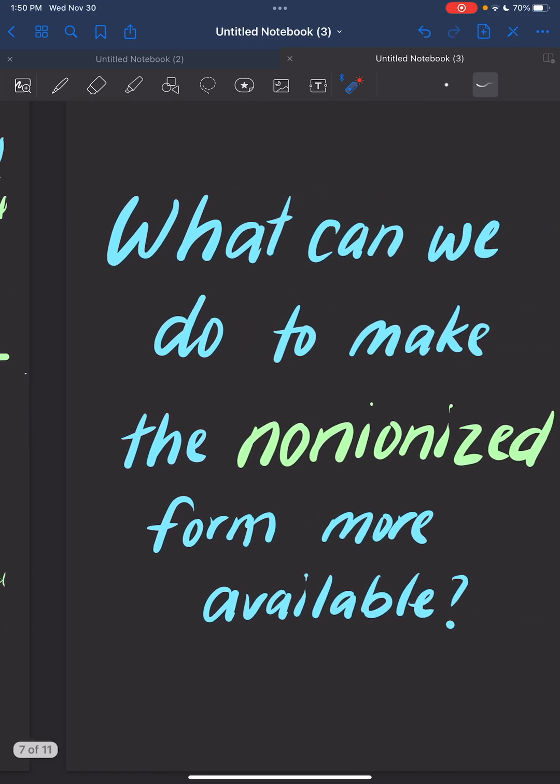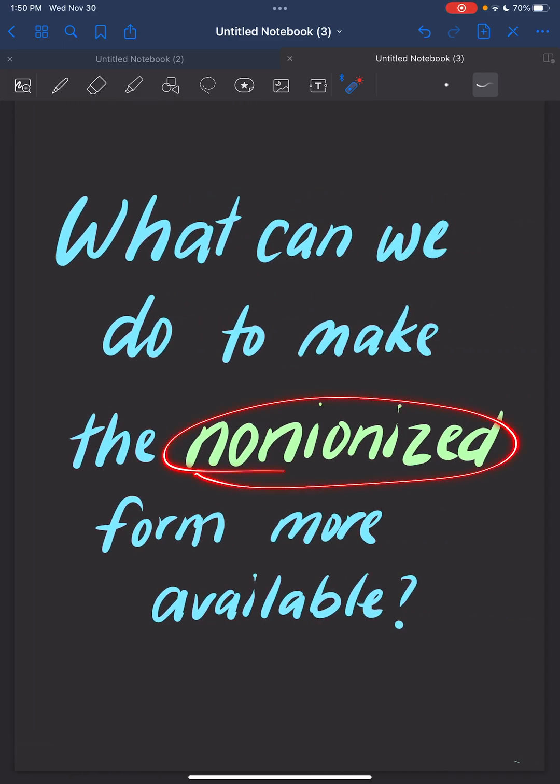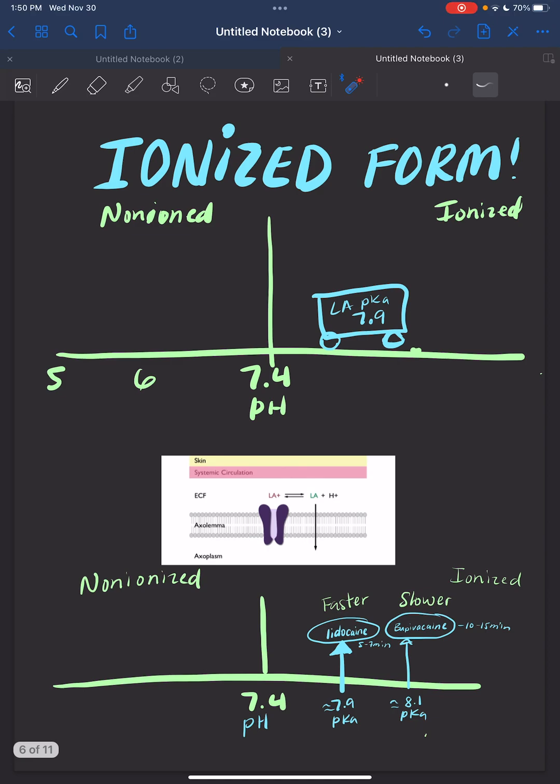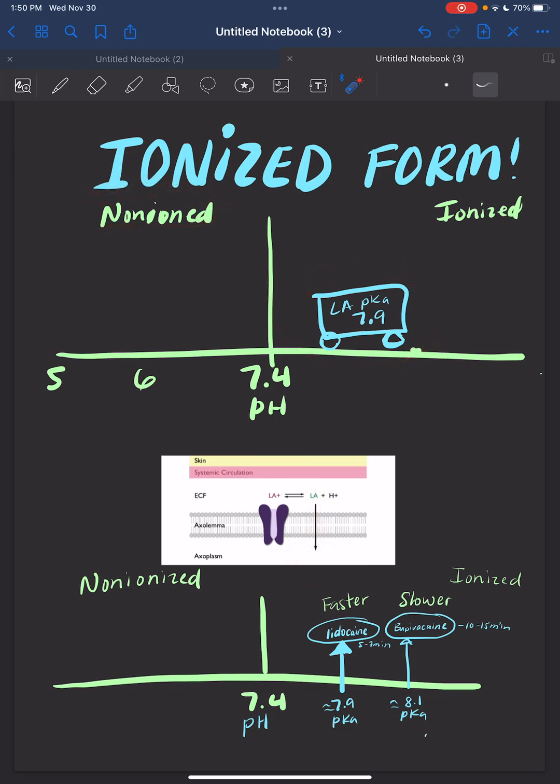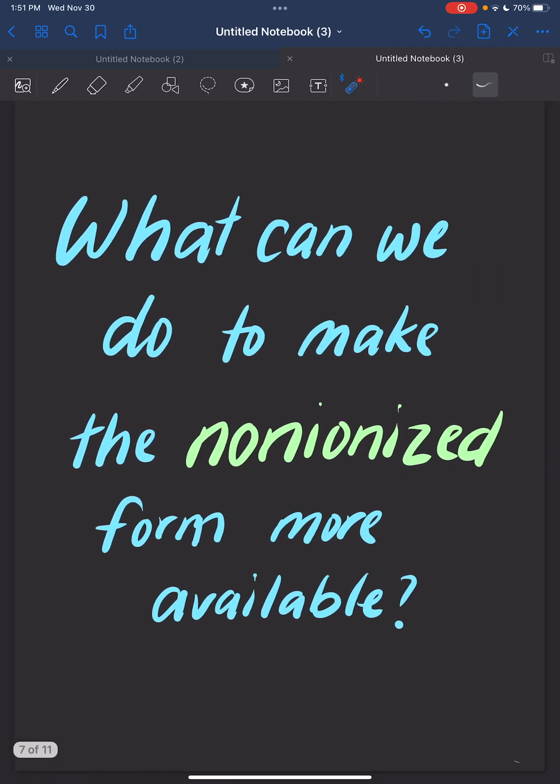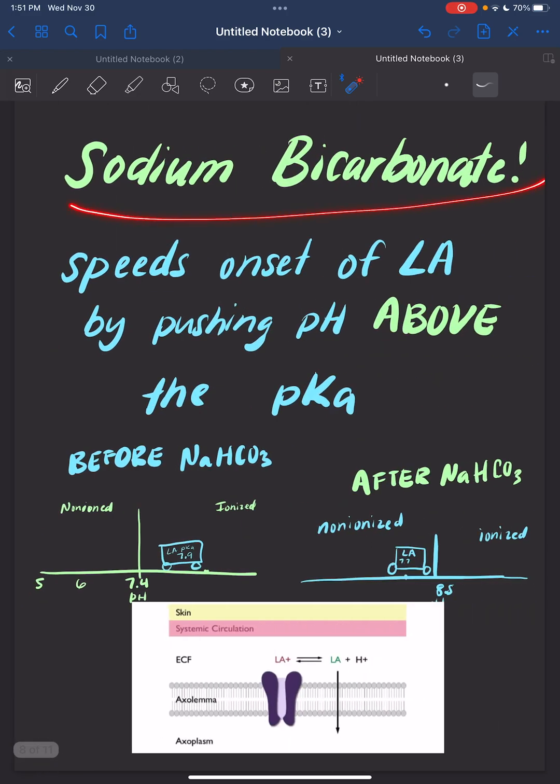What can we do to make the non-ionized form more available? What can we do to move this car over here to the more non-ionized form so it can cross the plasma lipid bilayer and take effect? Well, we can add sodium bicarbonate.